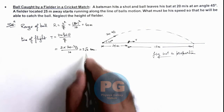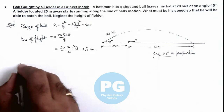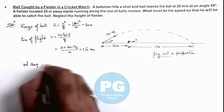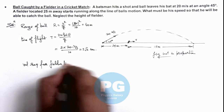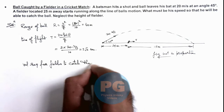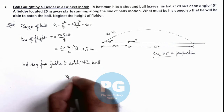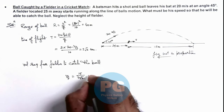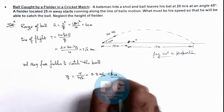In this much time, the fielder has to travel a distance of 15 meters. So we can directly write the velocity required for the fielder to catch the ball, which is v equal to 15 divided by 2 root 2. Numerically, if you calculate it, this is 5.3 meters per second — that is the result of this problem.